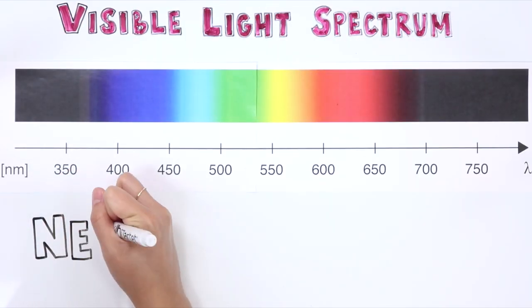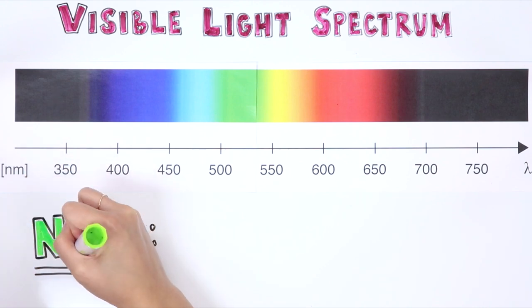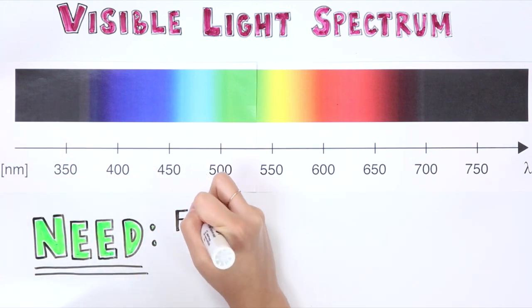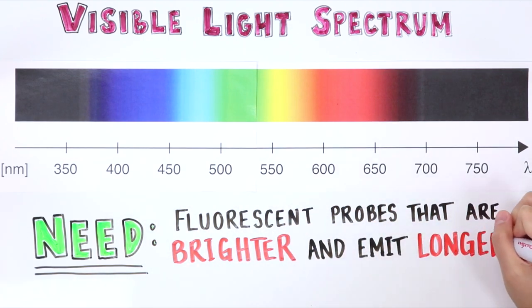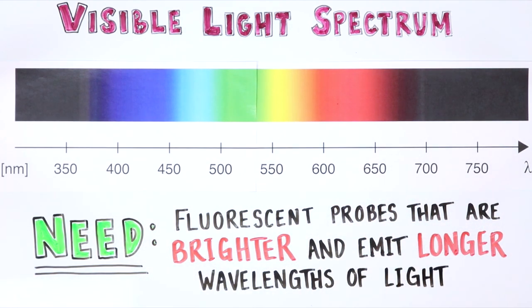However, most fluorophores that emit light in these wavelengths are not bright enough for biological applications. Figuring out how to make molecules that are both bright enough and emit long wavelengths of light has been a long-standing puzzle for chemists. In fact, most fluorophores used today, including those in clinical practice, were taken from very different other areas, such as the dye industry, and as a result have significant limitations for biological use.